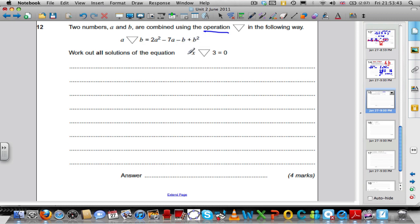So when it's saying X triangle 3 is equal to 0, it's saying for you to substitute X as A and substitute 3 as B, work this thing out here and make it equal to 0.